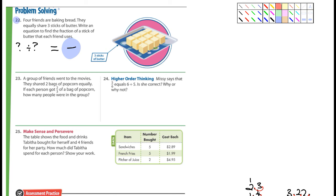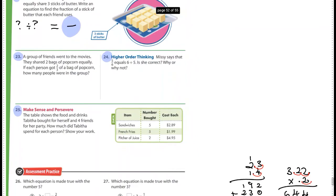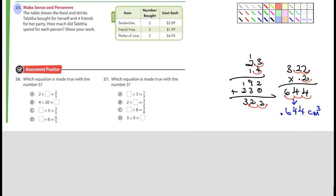Yeah, I want you guys to do 22, 23. Group of friends. One of the movies. They share two bags of butter. Okay. You can do 23, 24. Higher order thinking. Missy says that 5 over 6 equals 6. It's about, oh, okay. Missy's mistaken. And you can explain that. Why or why not? 25. Table shows food and drinks. Tabitha bought for herself and for friends. How much did Tabitha spend for each person? Show your work. Yeah, you guys can do that. 25. All right. Did I get 26 and 27 in there? I did. I actually want you guys to do those. I will tell you this. That there is one answer. Only one is going to be correct for those. All right. Okay. That's 9-1. Guess what? You guys, I want you to do 9-2. Because this isn't going to take you very long.